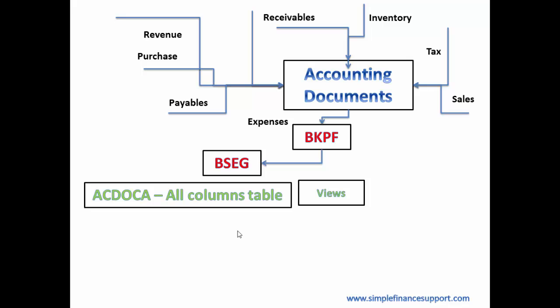SAP creates something called views. All the tables which were index tables — for example BSID, BSAD, BSIK, BSAK — all those technical tables become views. A view is a technical terminology in database parlance. A view does not allocate separate memory; it is a structure which accesses the underlying database table. Here, these views are created on the ACDOCA table itself. From the access point of view you still go through these views, but from the database storage point of view you are no longer storing in the index tables — you are storing in the huge database table which is ACDOCA.